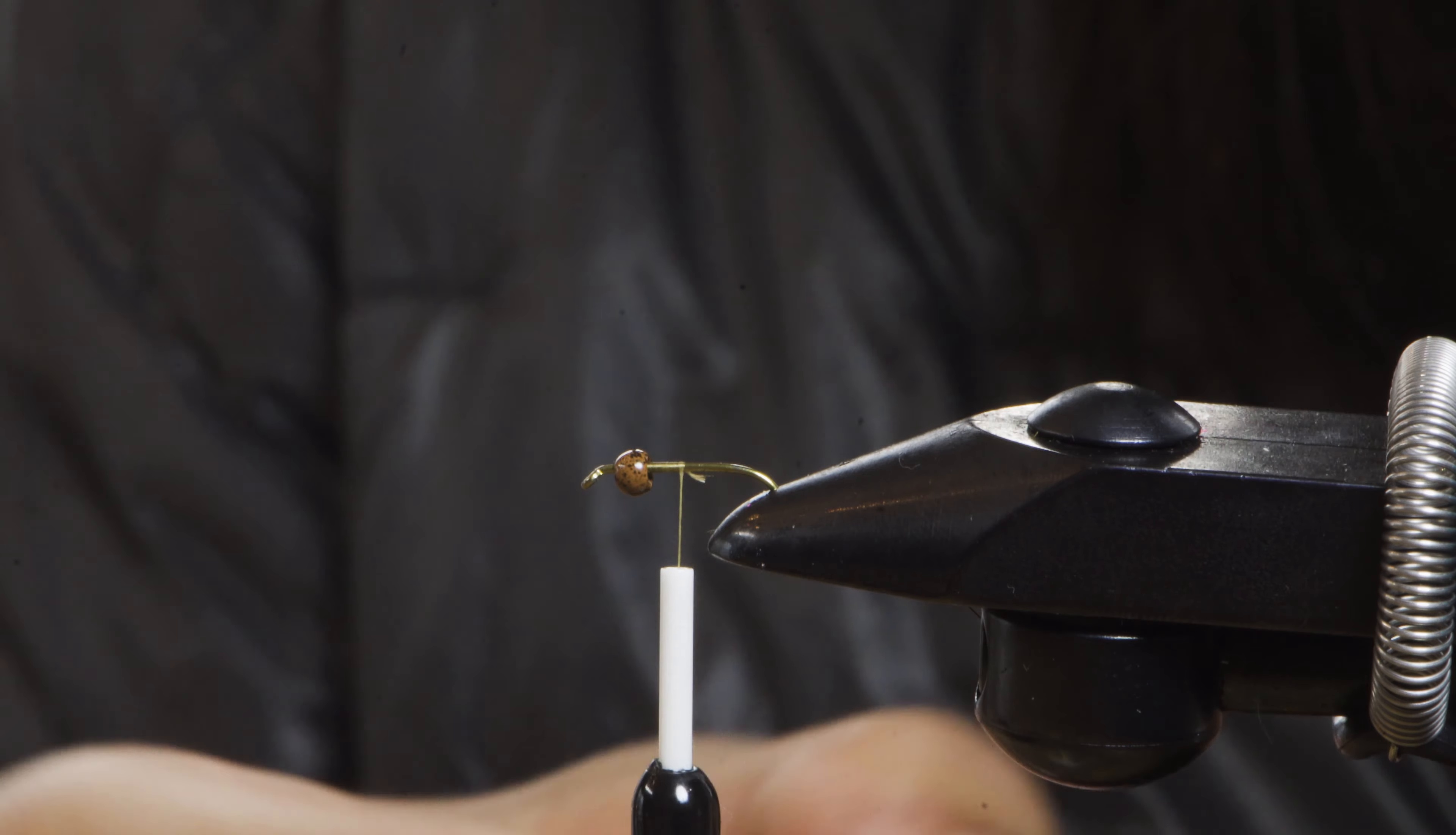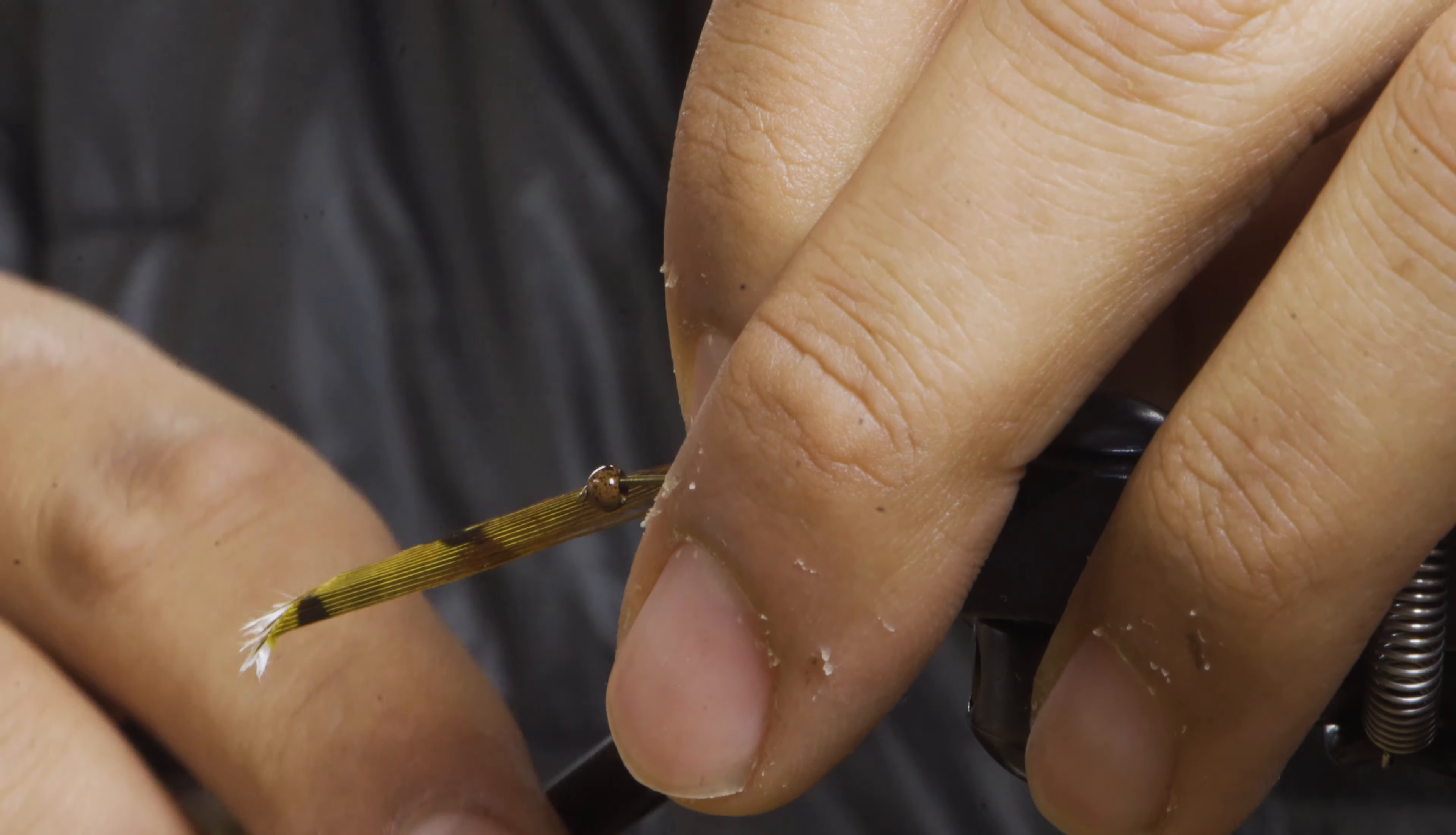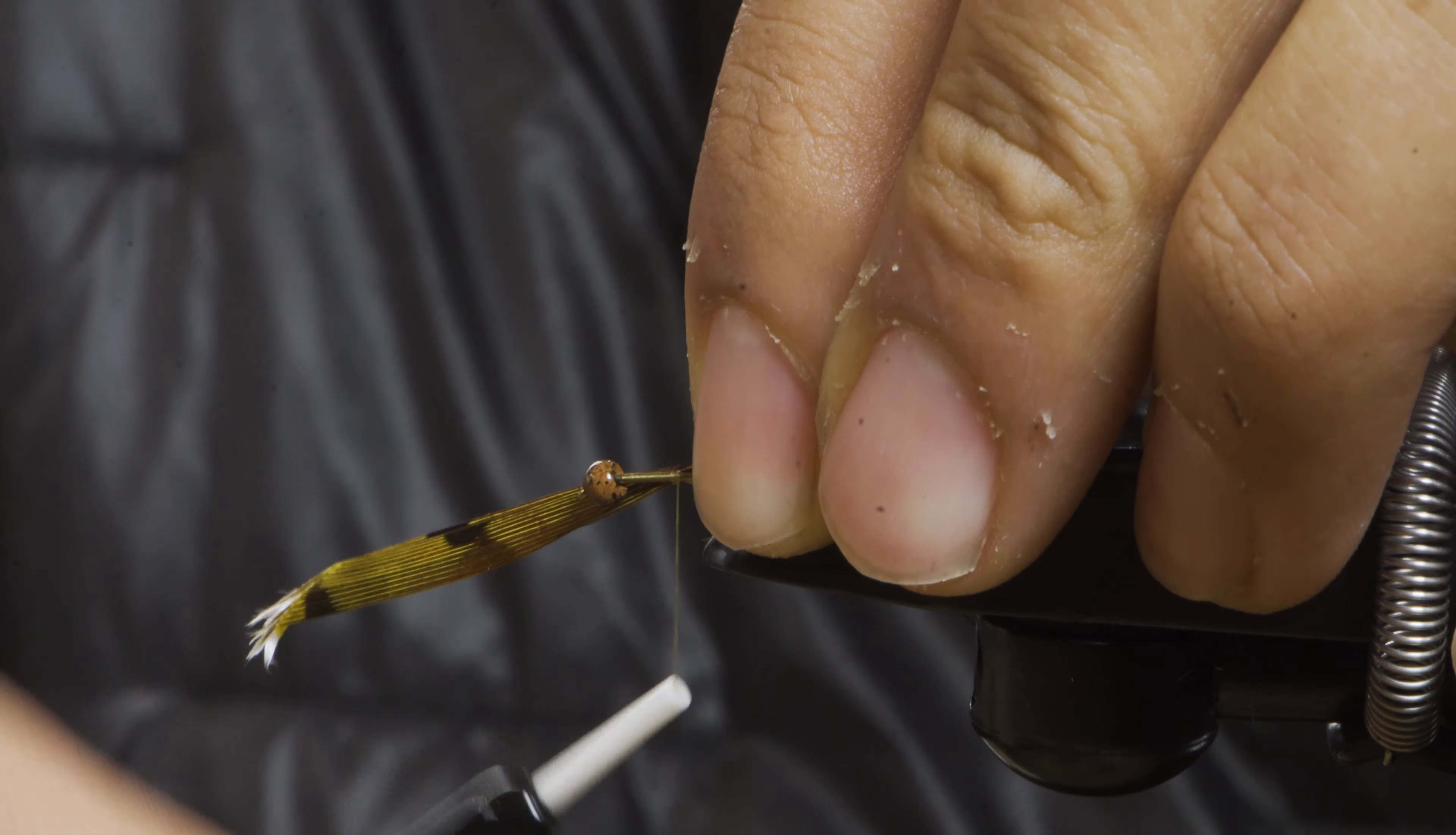First thing I'm going to do is lay down a short amount of thread and throw in my pheasant tail. Best way to keep this on top is to start with a loose thread wrap and then gain tension as you go over the hook. That'll keep it from sliding around.